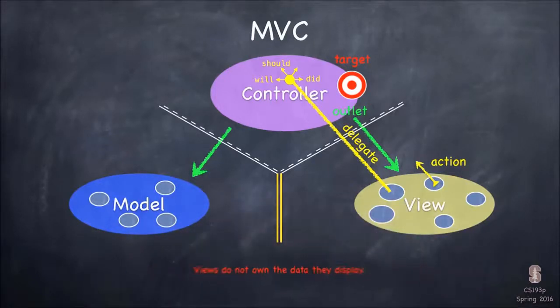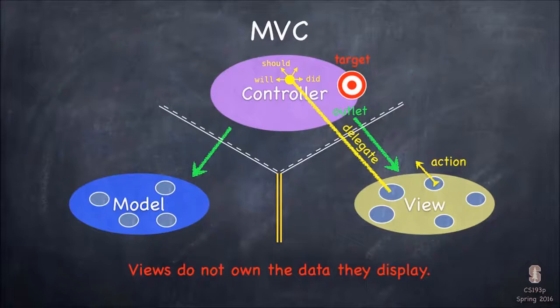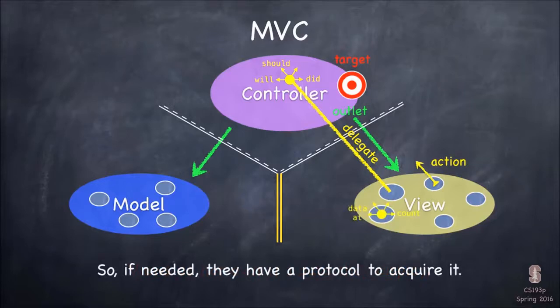And we're gonna talk about what protocols are. So all protocols are basically just a description of a bunch of methods that the other guy promises to implement. And so if you could imagine if the controller would promise to implement these will, should, and did things, then the view could talk to it, even if the view doesn't know what class it is. Now similarly, there's an important aspect of MVC, which is that the views, this view camp cannot own the data they are displaying. Now, how are they gonna display it if they don't own it? Well, they're gonna ask for it from the controller all the time. And the controller is gonna get it from the model. So that's another kind of protocol.